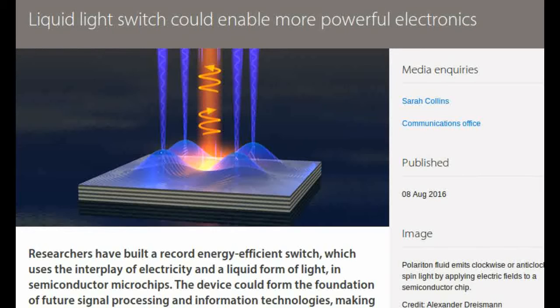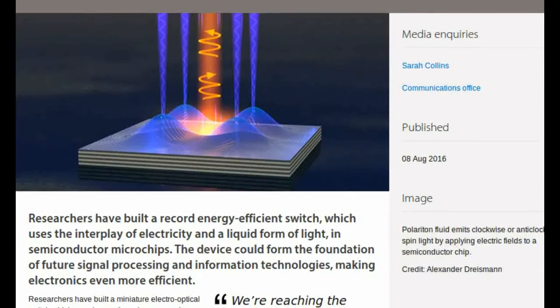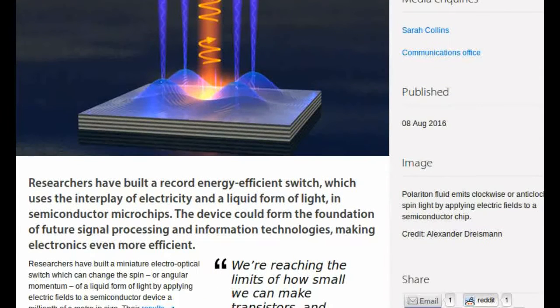Researchers have built a miniature electro-optical switch which can change the spin or angular momentum of a liquid form of light by applying electric fields to a semiconductor device a millionth of a meter in size.